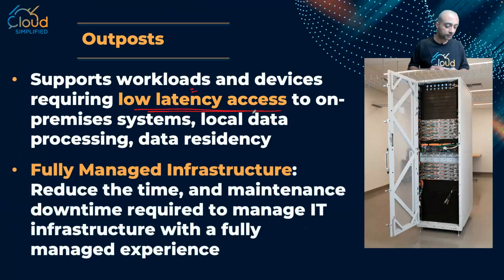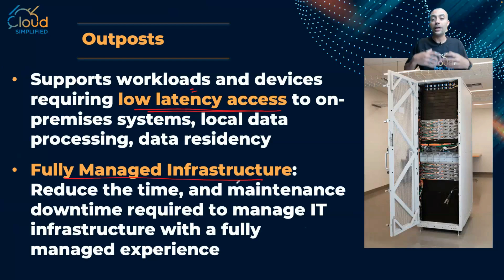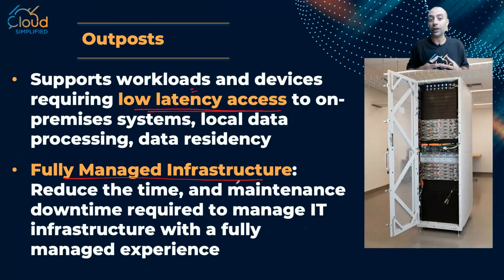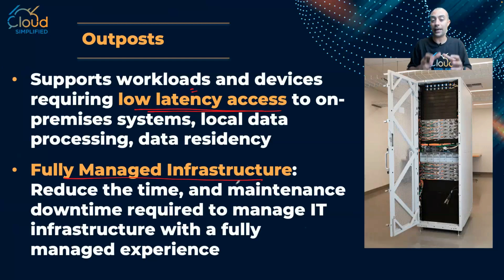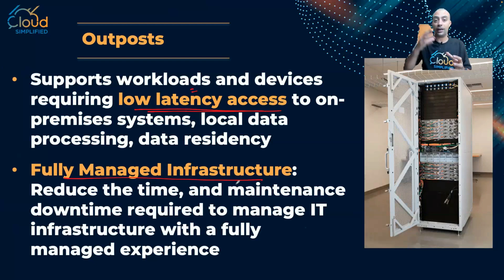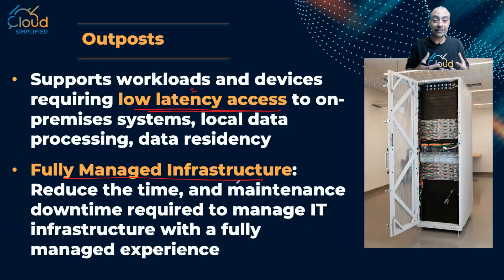Outposts by definition is fully managed infrastructure, which means you don't need to do racking and stacking, cabling and tagging, or configure networking, routing, switching, and virtualization. Outposts come completely fully managed and pre-configured — all you need to do is connect to power and the internet. Think of it as an extension in a hybrid cloud model, where part of your data is on AWS cloud and another part runs locally on your Outposts to provide low latency for latency-sensitive applications.